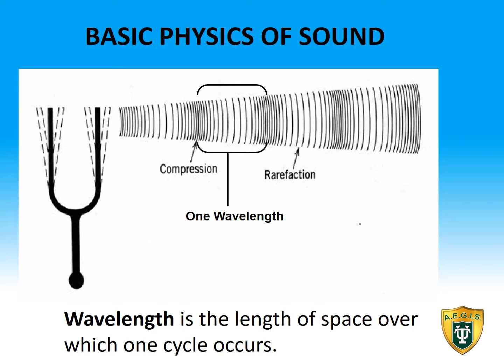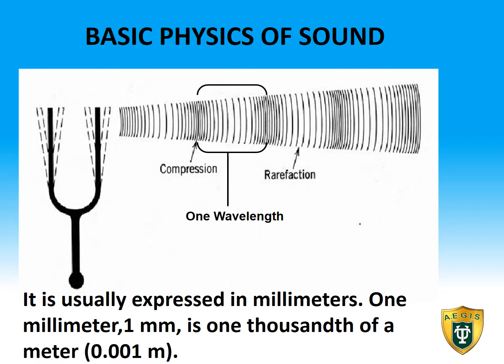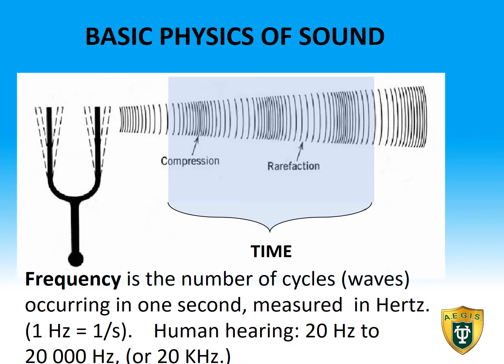Wavelength is the length of space over which one cycle occurs. It is usually expressed in millimeters — one millimeter, of course, is one thousandth of a meter. Frequency is the number of cycles or waves occurring in one second, measured in hertz. One hertz equals one cycle or wave per second.